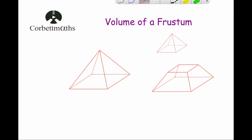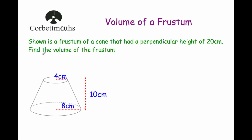So let's have a look at a question. We have got a frustrum of a cone — as you can see the top of it has been chopped off — that had a perpendicular height of 20 centimetres. What's left is 10 centimetres, so there was another 10 centimetres above it to get to the top of the cone, and that top has been chopped off. The question says: find the volume of the frustrum. To find the volume of a frustrum, what I tend to do is work out the volume of the whole big cone first, then work out the volume of what's been chopped off, and take those away to find the volume of what's been left — the frustrum.